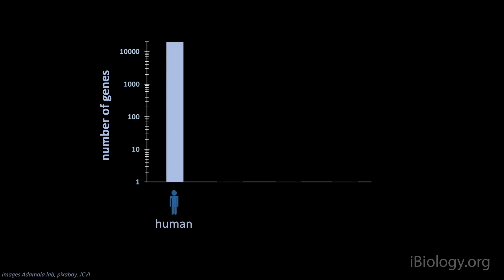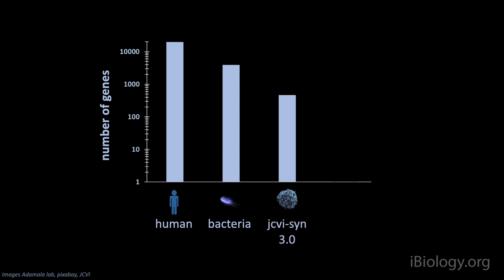Humans have about 20,000 genes. Bacteria about an order of magnitude less. The first live organism with a completely synthetic genome has 474 genes. And our non-living synthetic minimal cell usually has about a dozen genes.